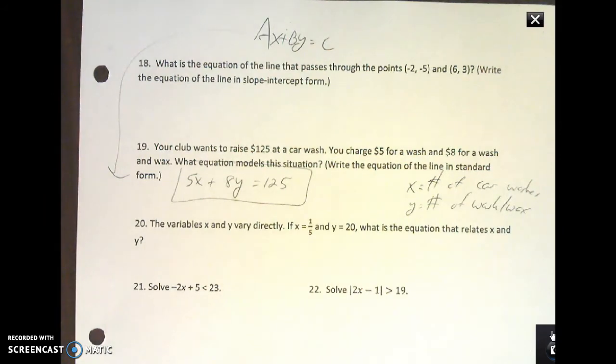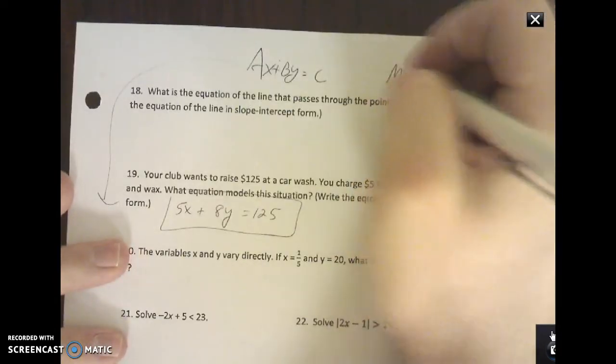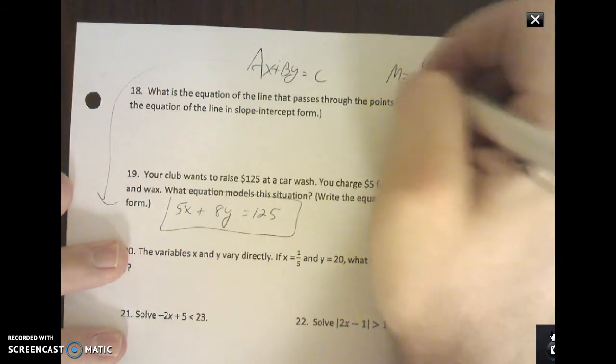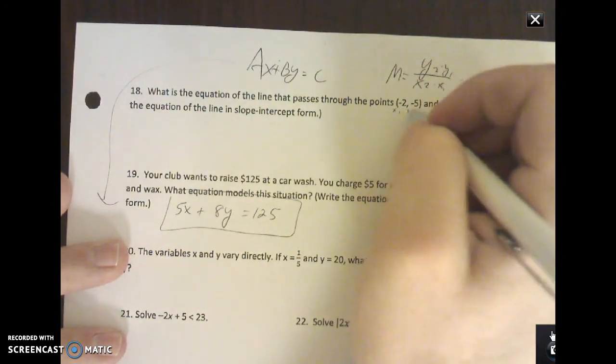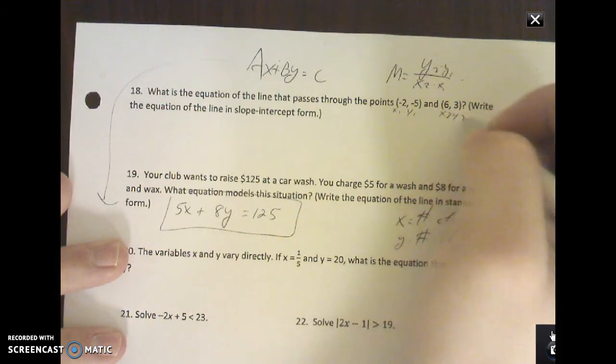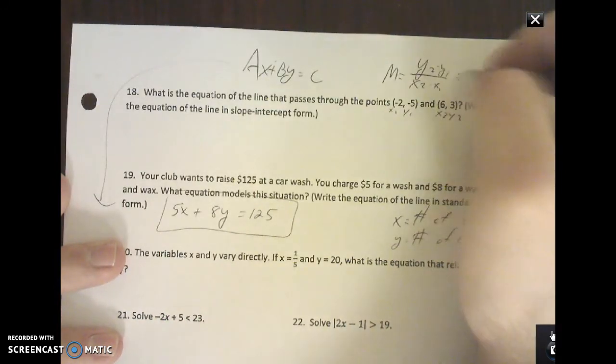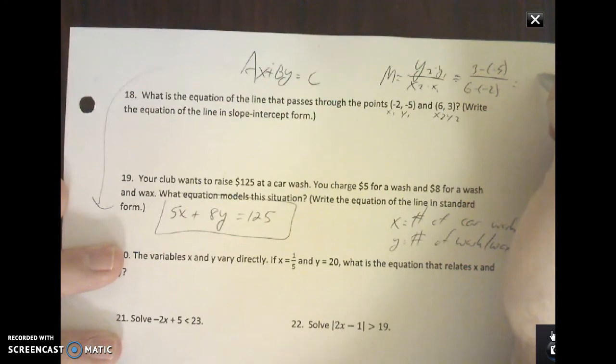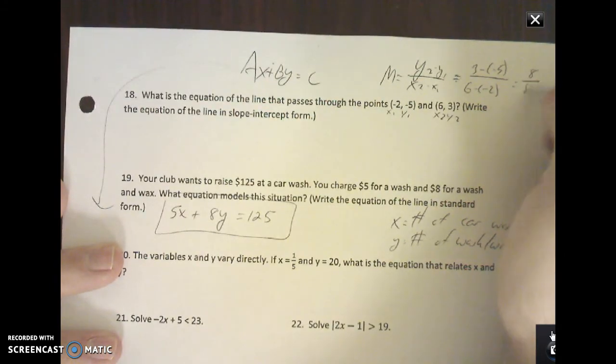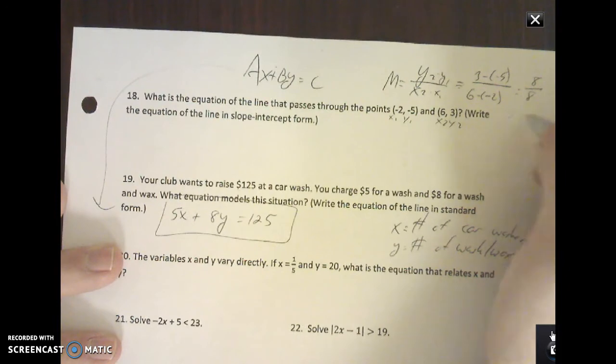What's the equation of a line that passes through the points (-2, -5) and (6, 3)? Write the equation in slope intercept form. You need to find your slope first. So here's x1, y1, x2, y2, and if I plug everything in here, I get 3 minus negative 5 over 6 minus negative 2. Up top I get 8, down low I get 8. Eight over eight is one.